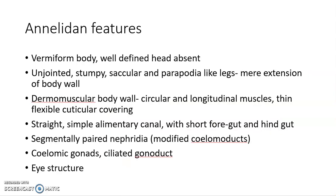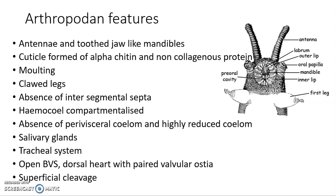Peripatus shows both annelidan and arthropodan features. Annelidan features include: vermiform body, well-defined head absent, unjointed stumpy parapodia-like legs which are mere extensions of the body wall, dermomuscular body wall with flexible cuticular covering, a straight simple alimentary canal with short foregut and hindgut, segmentally paired nephridia that are modified coelomoducts, coelomic gonads with ciliated gonoducts, and eye structure similar to annelids.